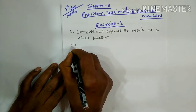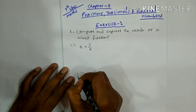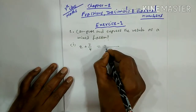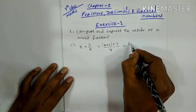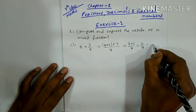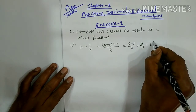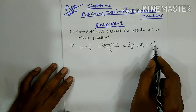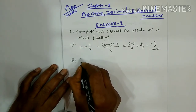Question number 1 has 6 bits. First bit: 2 plus 3 by 4. The LCM is 4. So 4 into 2 plus 3, which equals 8 plus 3 by 4, which equals 11 by 4. We can write this as the mixed fraction 2 and 3 by 4.